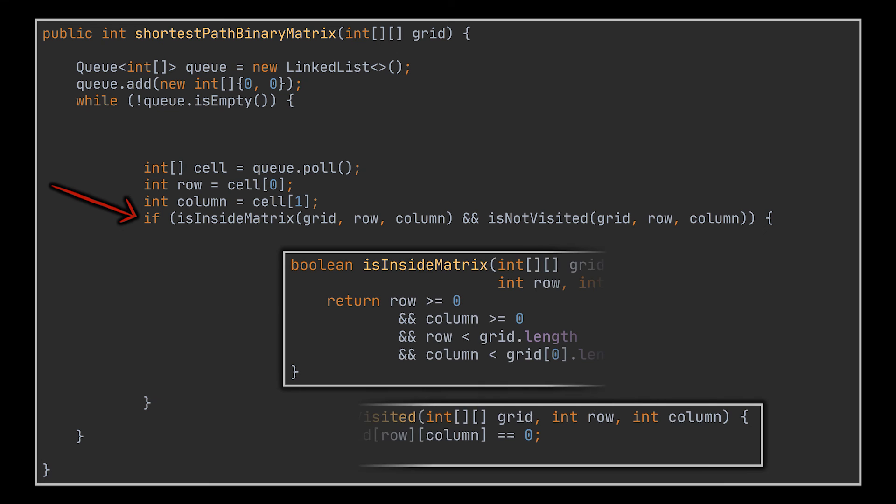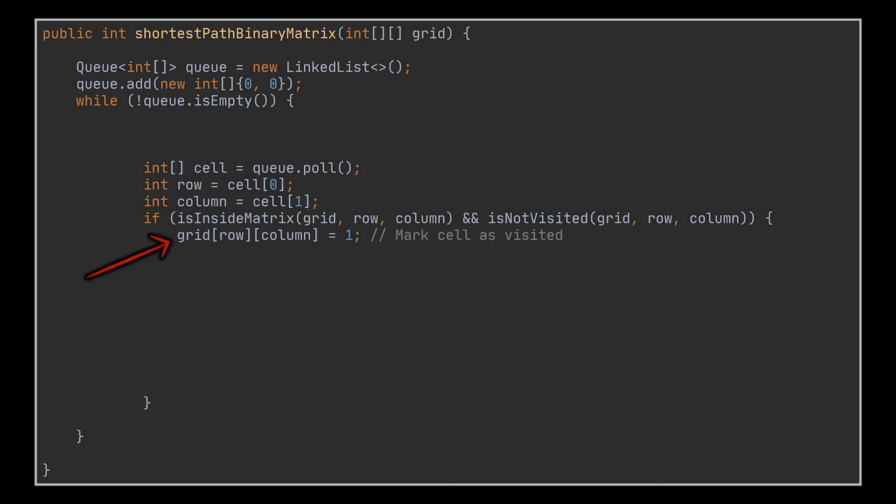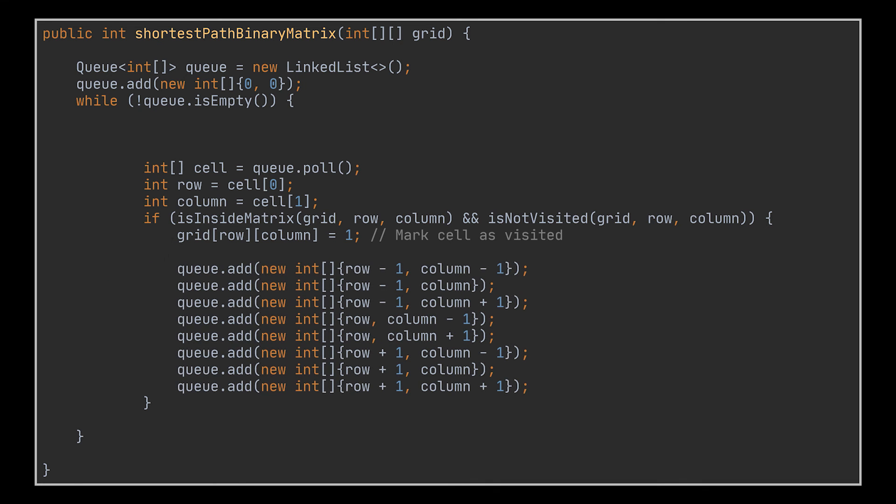For each cell we pull from that queue, we will check if it is inside the matrix and of course make sure that it wasn't visited before. This was done here with the helper methods you see in front of you and should be straightforward. If these conditions are met, we will mark this cell as visited by making use of the values we have inside the cells, meaning the zero will become a one as one represents the visited status here. We will then proceed by adding to the queue the eight directionally adjacent cells to the current one.